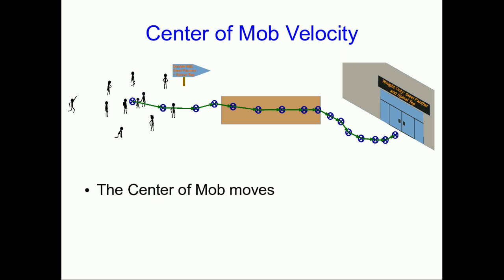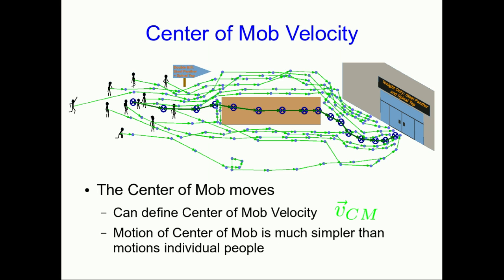The mob moves, so the center of mob will move, and you can define a center of mob velocity. One thing to notice is that the center of mob's motion is going to tend to be much simpler than the motions of the individual people, because in the averaging process, the complexities of their motions will tend to cancel out.